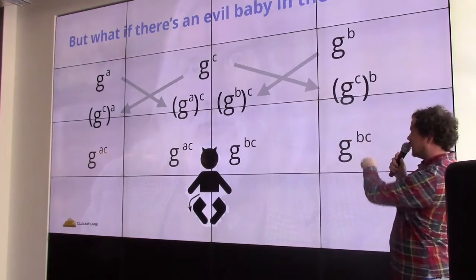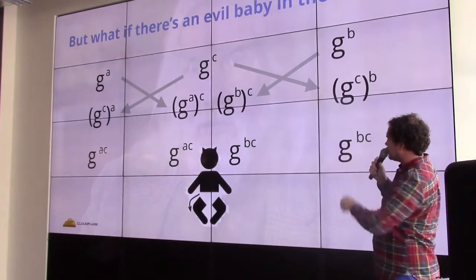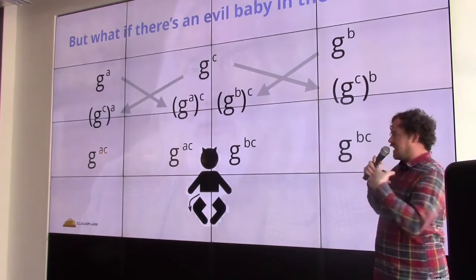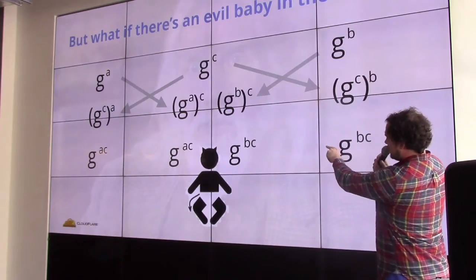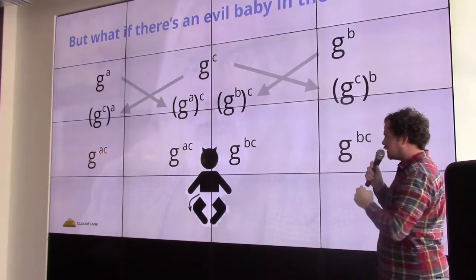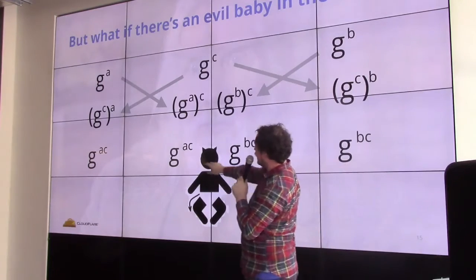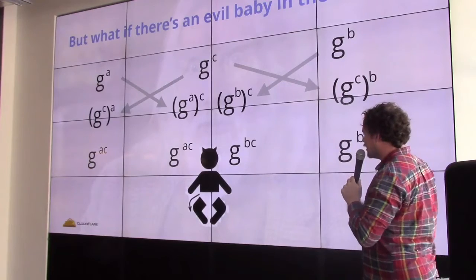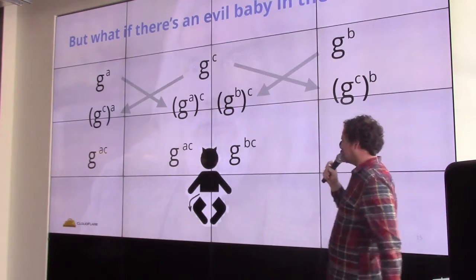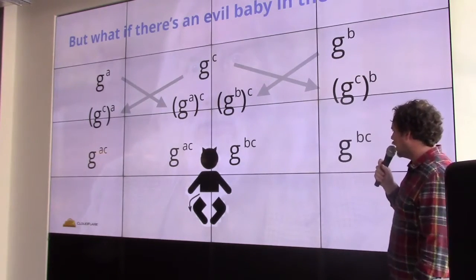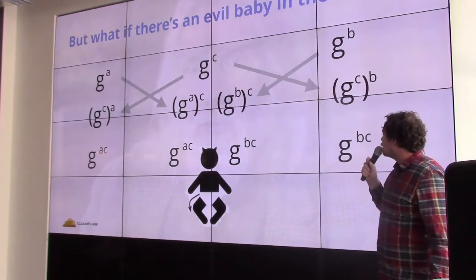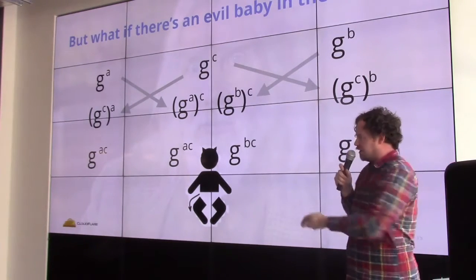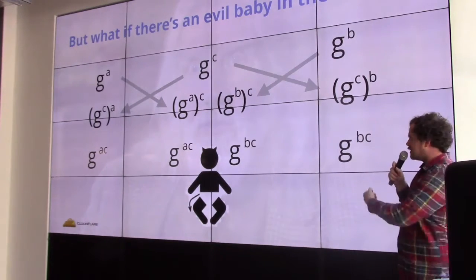You can take Diffie-Hellman and kind of sit in between. If you have the ability to change and modify messages as they go through, you can set yourself up as pretending to be the server to the client and pretending to be the client to the server. And then anything the client sends — they think they're talking to the server but they're actually talking to this malicious adversary. We call them Mallory in the crypto jargon, but Mallory here's a baby. So you can have this kind of evil baby sitting between listening. How do you do a key exchange if there's the potential of anybody changing these messages?